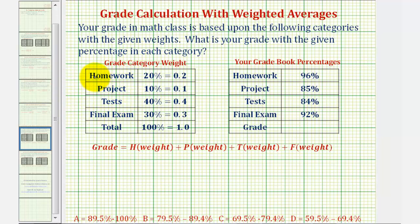Homework is worth 20 percent of the grade, the project is worth 10 percent of the grade, the tests are worth 40 percent of the grade, and the final exam is worth 30 percent of the grade. Notice how this total would be 100 percent of your grade.